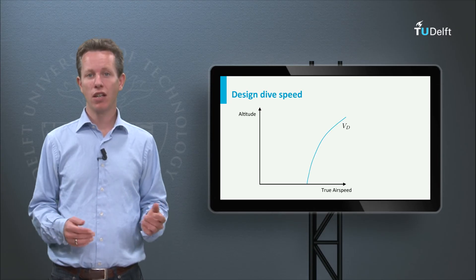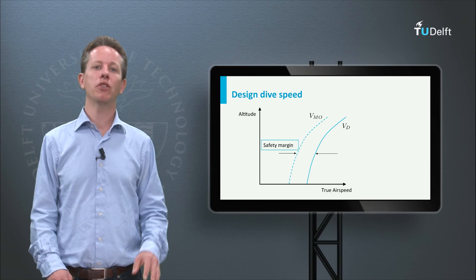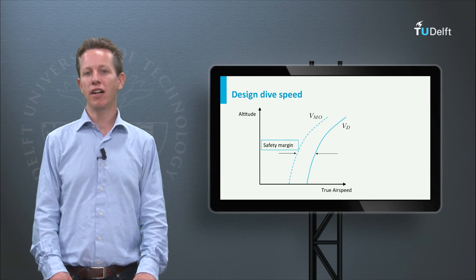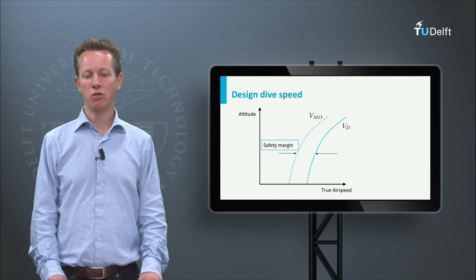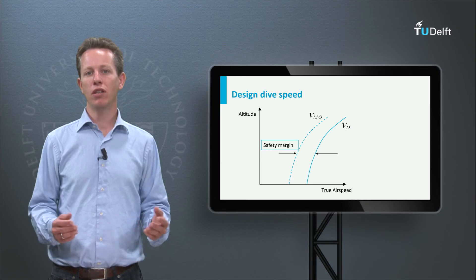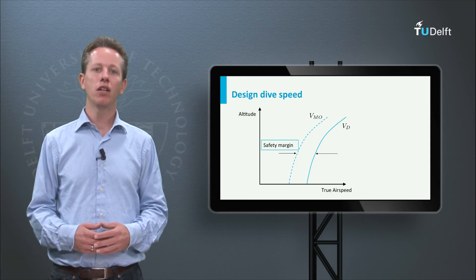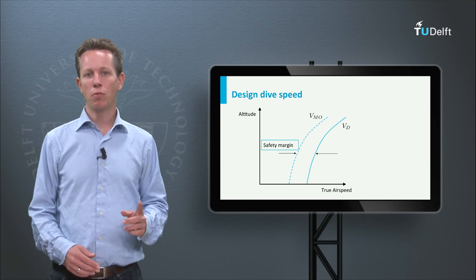In order to be on the safe side, a small safety margin has been defined by the regulatory bodies with respect to the design dive speed. This limit is called the maximum operating speed. This is the first operational limits we can draw in a velocity-altitude diagram, the flight envelope. Let's have a look at the other operational limits, starting with the maximum Mach number.